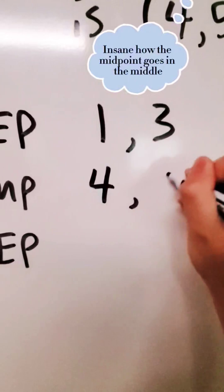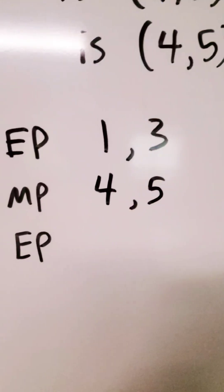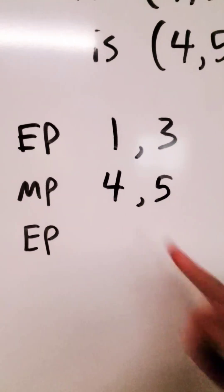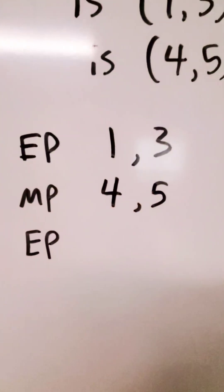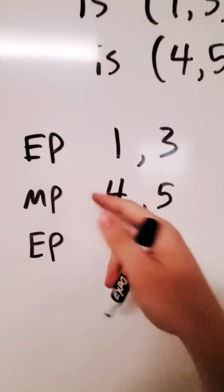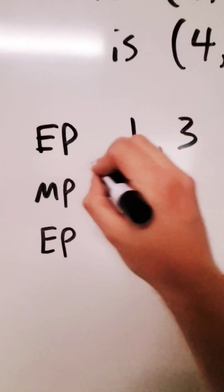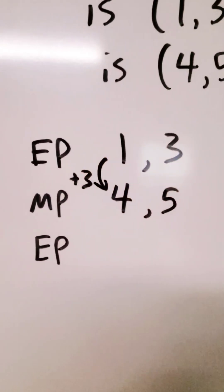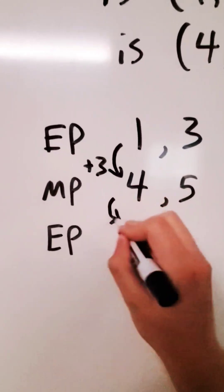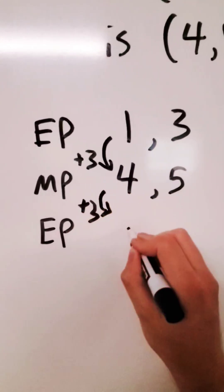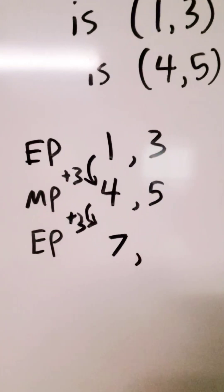So what we're going to do now is figure out what would we have to add or subtract to get from 1 to 4. The answer here is 3. You add 3 to get from 1 to 4. So I'm going to write plus 3, and then I'm just going to do it again. Add 3 one more time. That is the x value of our endpoint.